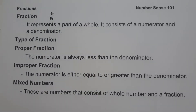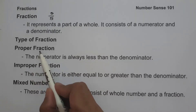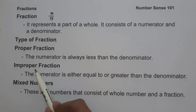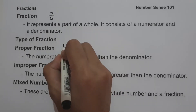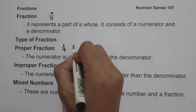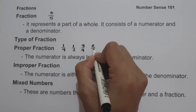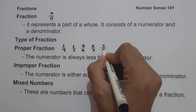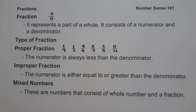There are different types of fractions. The first one is proper fraction, the second one is improper fraction, and lastly, mixed numbers. When you say proper fraction, the numerator is always less than the denominator. For example, 1 fourth, 1 half, 3 fourth, 2 third, 5 over 8, and 11 over 12 are examples of proper fractions.